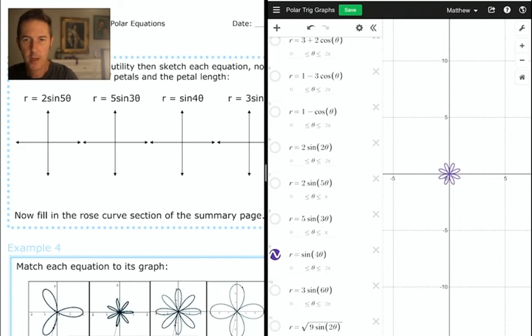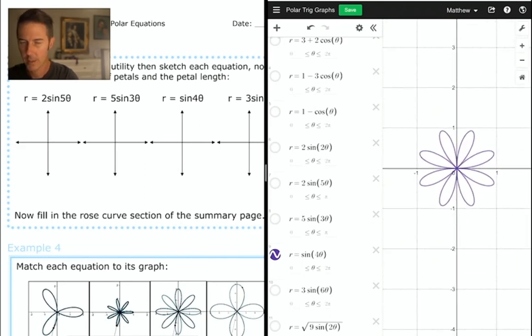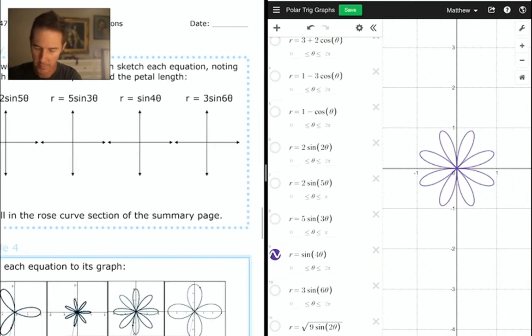Our next graph, sine 4 theta. The 4 in front of theta means that we're going to have twice that many petals, so you're seeing the 8 petals, but the invisible leading coefficient there in front of the sine function is a 1, so the length of each of these petals is 1. And finally, we have 3 sine 6 theta.